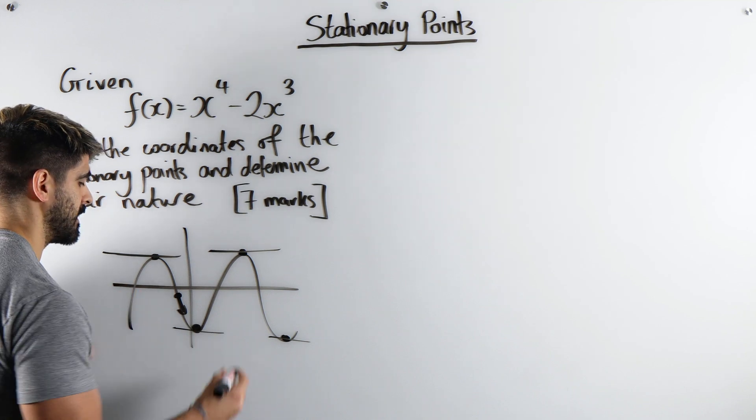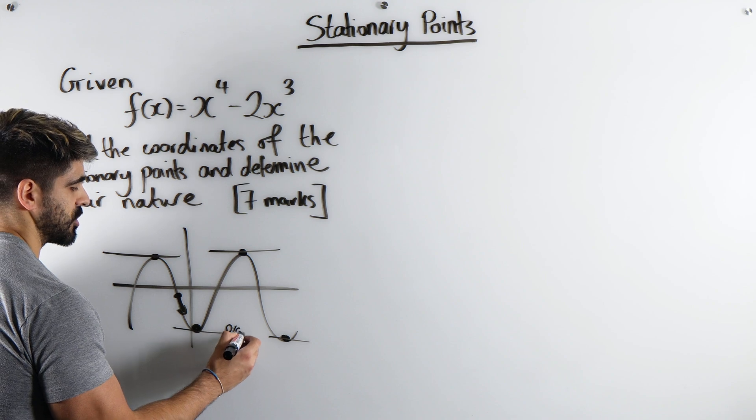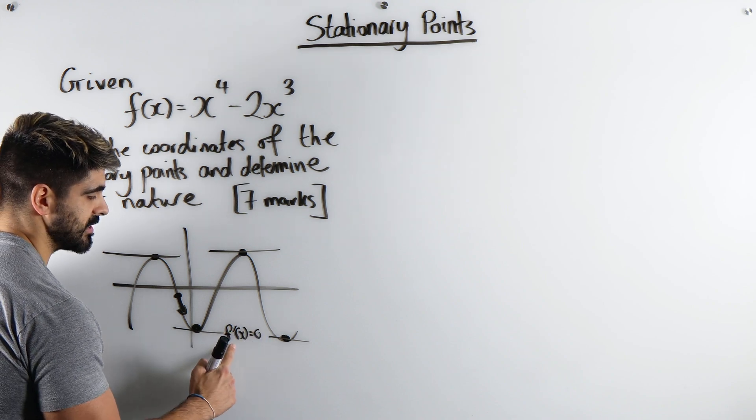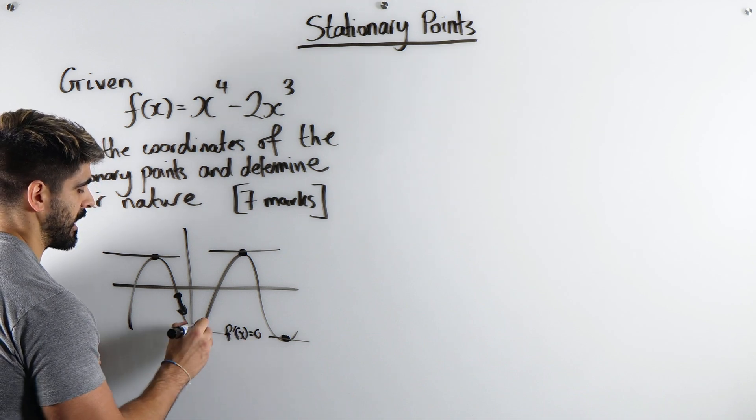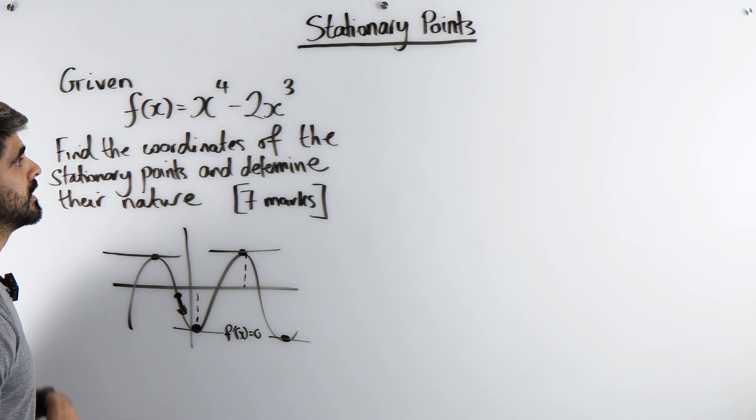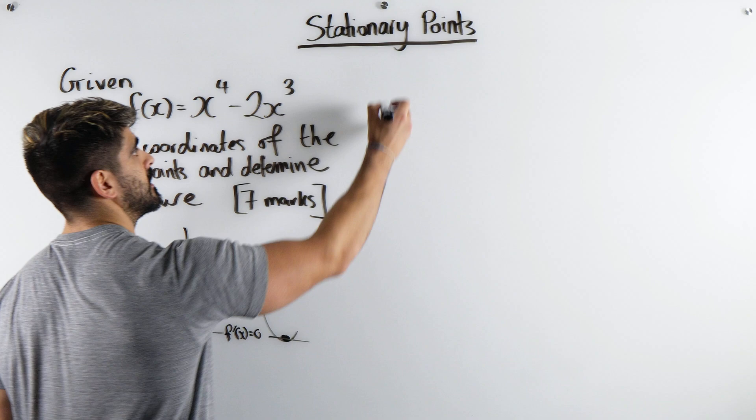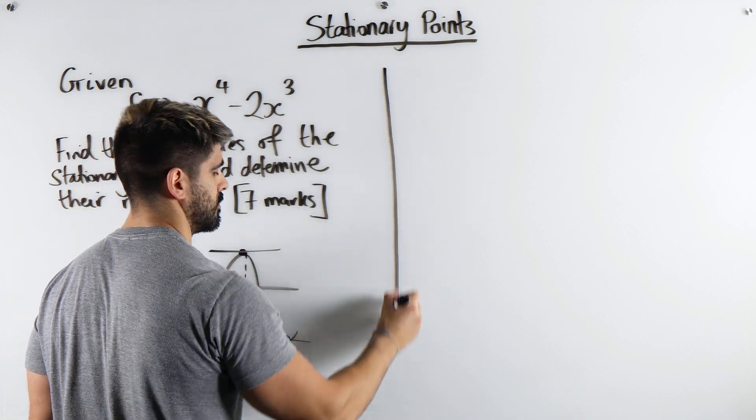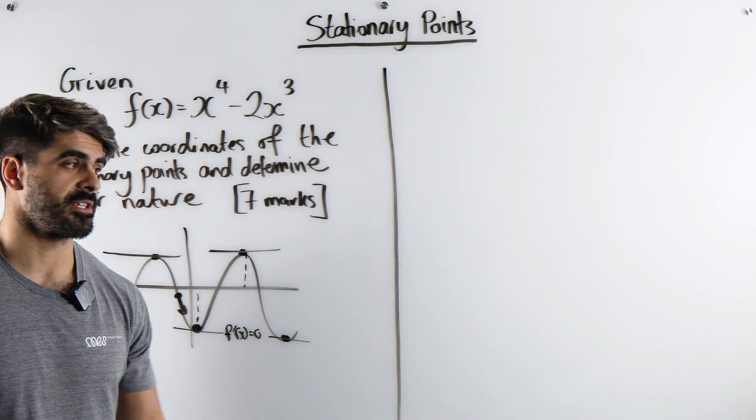And in this case, we say f'(x) is 0. The gradient function is equal to 0 at whatever these x values are. So the first thing we're going to have to do here is we're going to have to differentiate it and make it equal to 0.